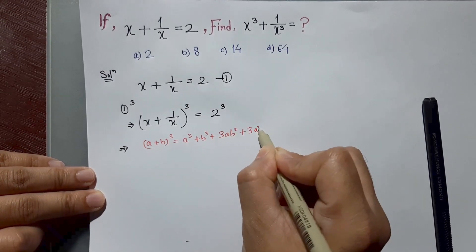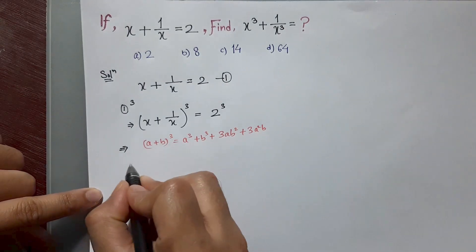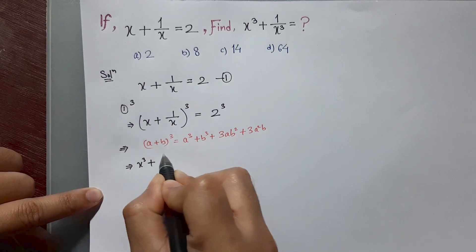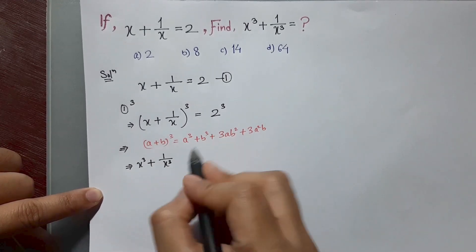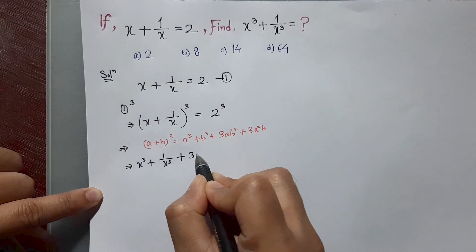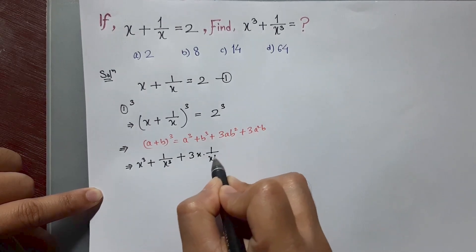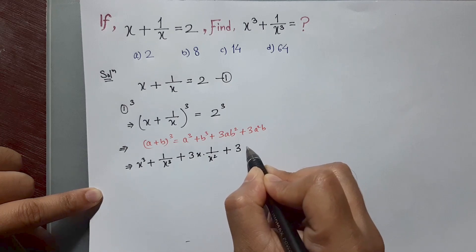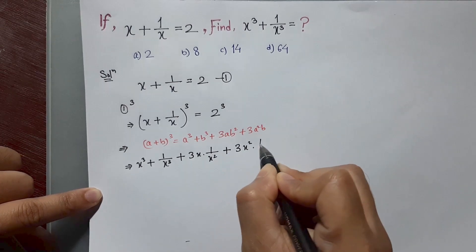It will become x cube plus 1 by x cube plus 3 x into 1 by x square plus 3 into x square into 1 by x.